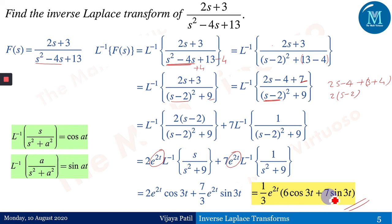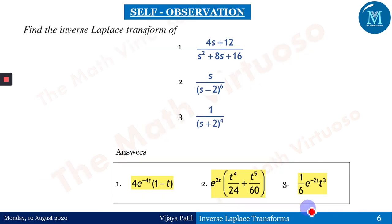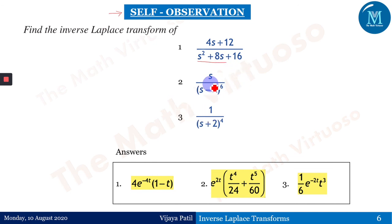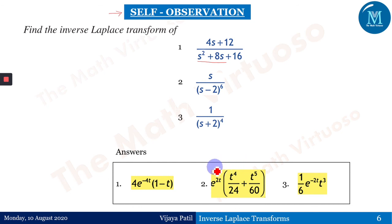We have reached the self-observation section. The three key steps are: concentrate on the denominator first, make a perfect square, then adjust the numerator accordingly. Try to solve the examples and get the same answers. If you have any queries or want me to improve the videos, please comment in the comment section. Thank you, happy learning.